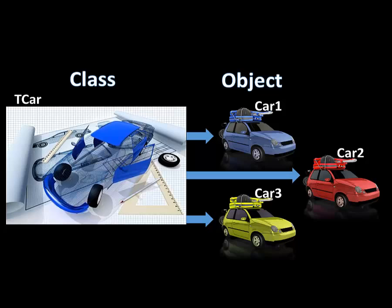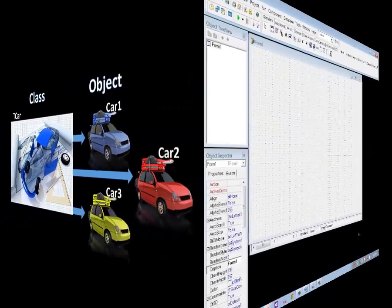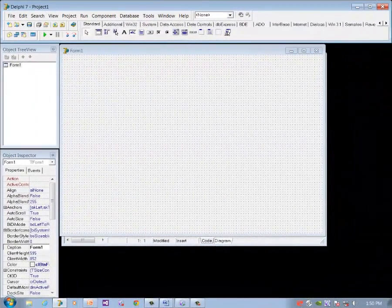The same principles apply to programming objects, like edits. If you add more than one instance of an edit component on a form, you can change their properties individually. For example, you can change edit1's color to blue, edit2 to red and edit3 to yellow.